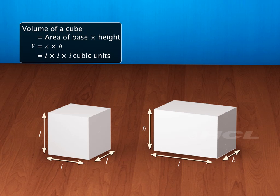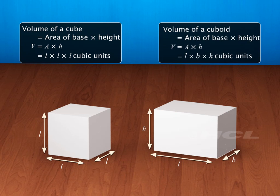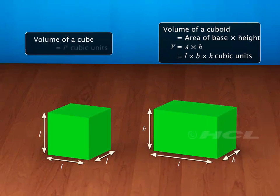Hence, the volume of a cube is the product of the area of its base and height, while the volume of a cuboid is also obtained by calculating the product of the area of its base and height.